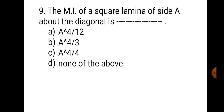Question number 9. The MI of a square lamina of side A about the diagonal is: A. A⁴/12, B. A⁴/3, C. A⁴/4, and D. None of the above. For a square, I_XX, I_YY, and I about the diagonal are all equal. Therefore, here also the answer is A. A⁴/12.